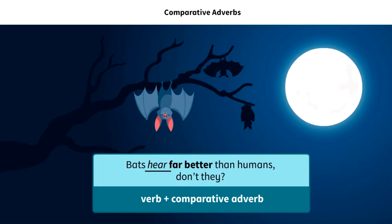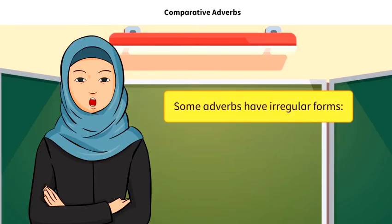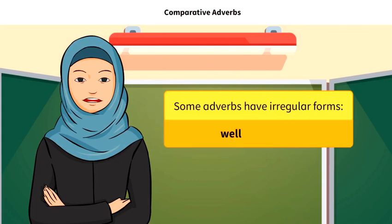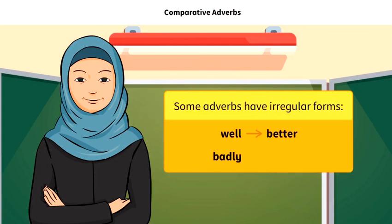In the statement, bats hear far better than humans, don't they? Far better is the comparative adverb. Some adverbs have irregular forms: well, better, badly, worse. Let us move on.